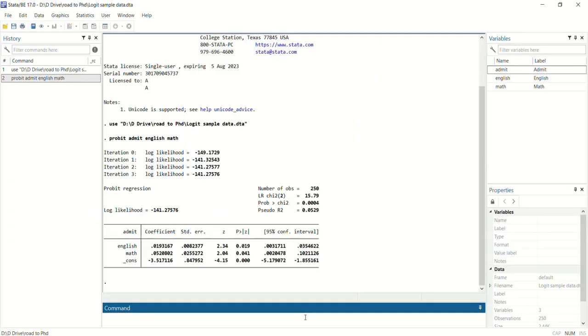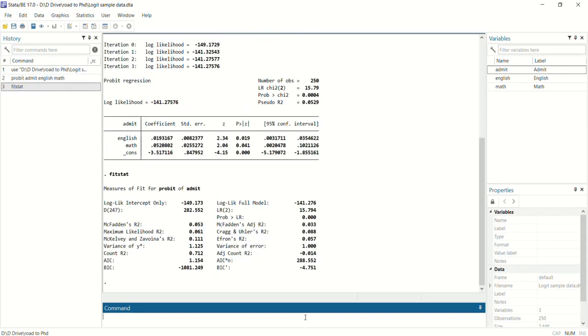If you want to get information for some other fit statistics, we will run this command fitstat and press enter. Here you can see we can get information about some other R-squared measures and we can also get information about AIC and BIC.